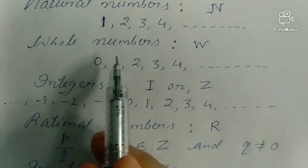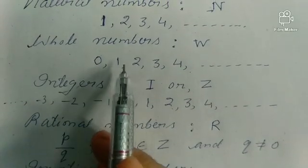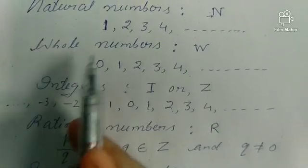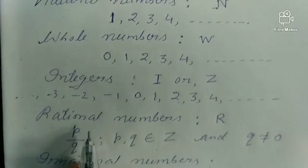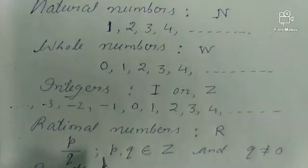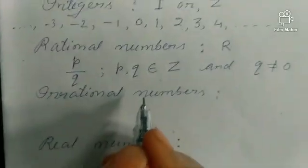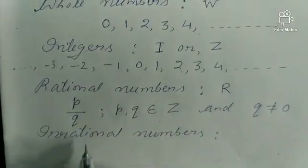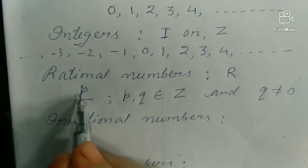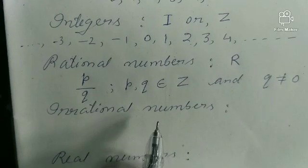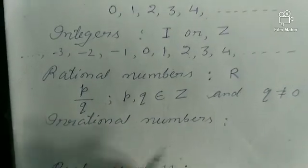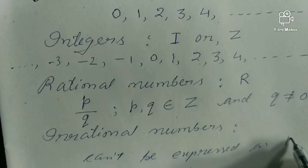Similarly, 0 can be expressed as 0/1 or 0/2 or 0/3, so all the whole numbers are also rational numbers. Integers are also rational numbers. Now coming to irrational numbers — irrational numbers are the numbers which cannot be expressed in the form of P by Q, where P and Q are integers and Q is not equal to 0. These are the irrational numbers.